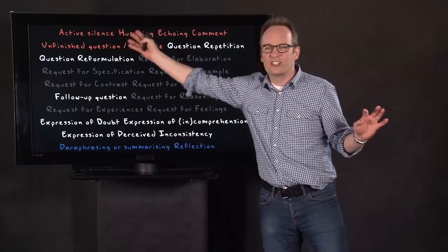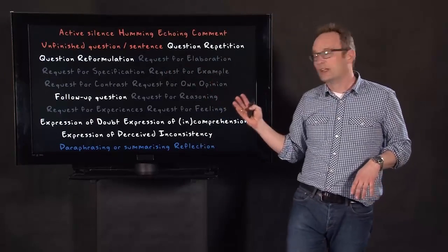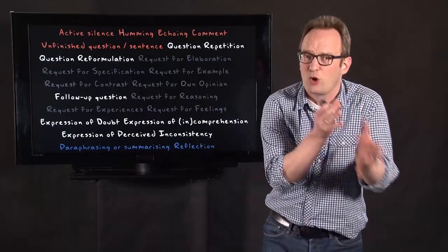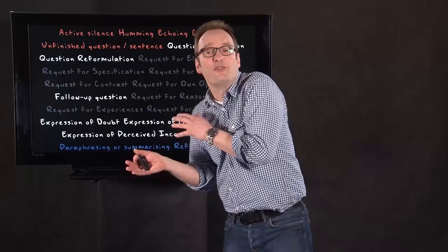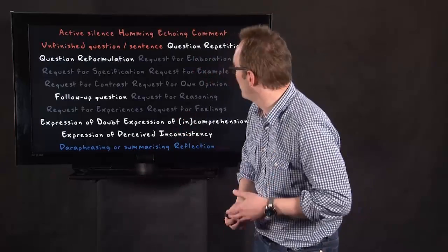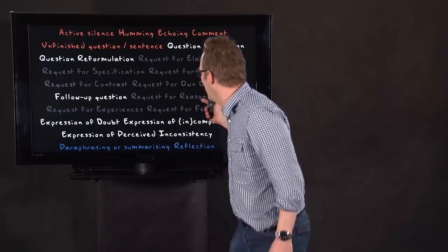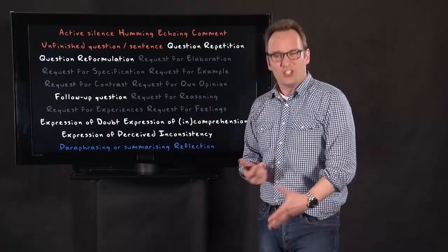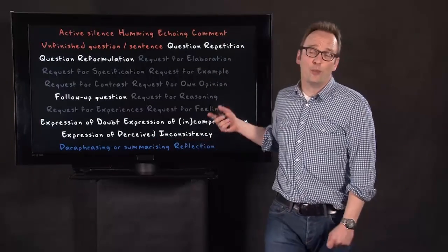And here we see the red ones are more minimal probes. The gray ones here are requests. Requests for elaboration, specification, request for a contrast, difference between an acquaintance and a friend. That's a request for a contrast. Request for an example. But how do you feel about this? A request for a feeling or a request for someone's own opinion. What's your opinion on this then? And these are the really cool probing techniques.